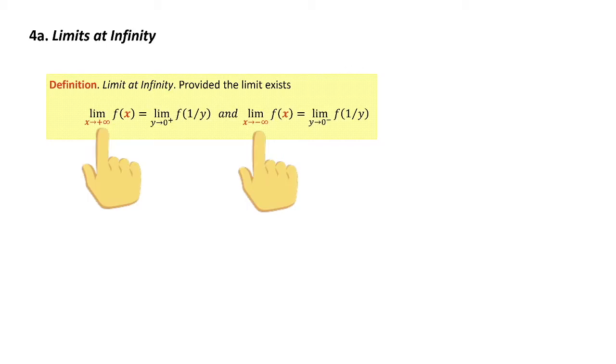We know how to evaluate the limit at a point by either plugging it if the function is continuous or by using the extension theorem. When we're talking about x goes to plus infinity or minus infinity, these are limits at infinity, there's not really a point there. The question is, how do we reconfigure the problem so we can use the tools we have? We don't want to reinvent the wheel.